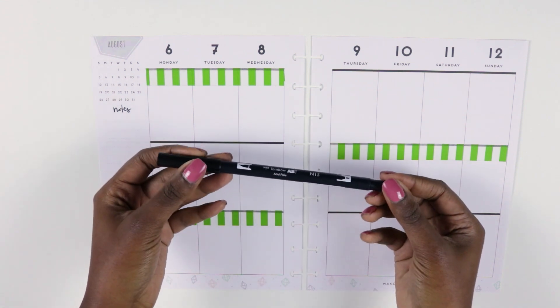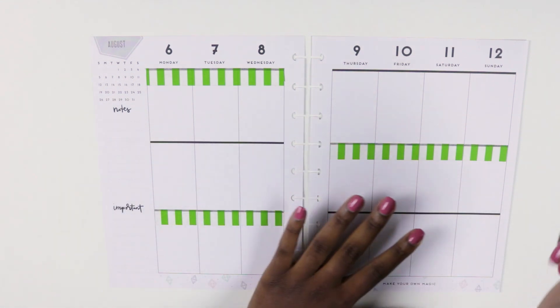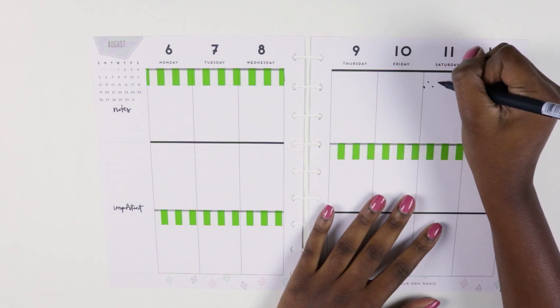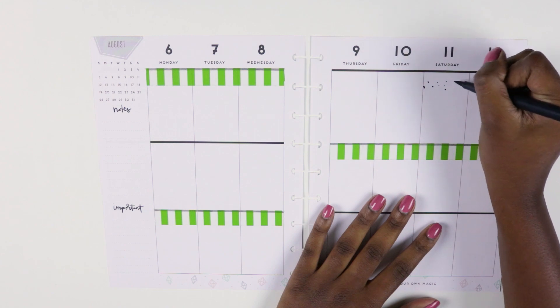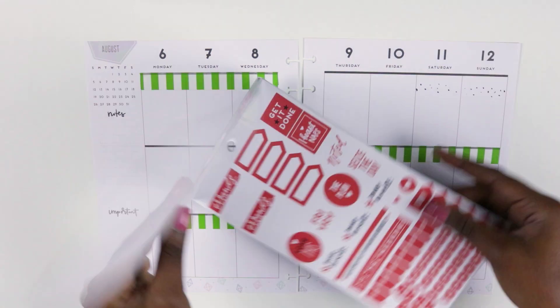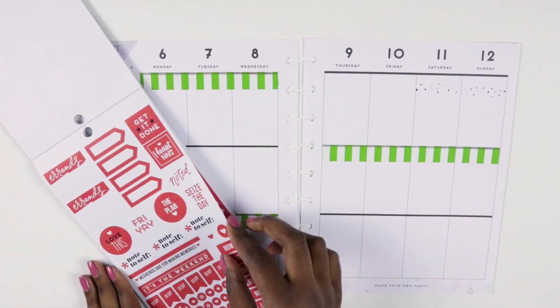Next I'm taking a black Tombow dual brush pen and I'm using the brush side to make little dots on the top of Saturday and Sunday. I'm trying to mimic the little watermelon seeds in the stickers that I'm going to show you guys in a bit. In the rainbow kit, I'm taking the red weekend banner and then just placing that on top.